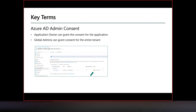The last key term is Azure AD admin consent. In order to use permissions and roles in an Azure AD application, the API permission must be consented by either a global admin — who can consent for an entire tenant — or an application owner can consent for a specific application scope. Consent must be provided before you can use scopes or roles from within an AD application.